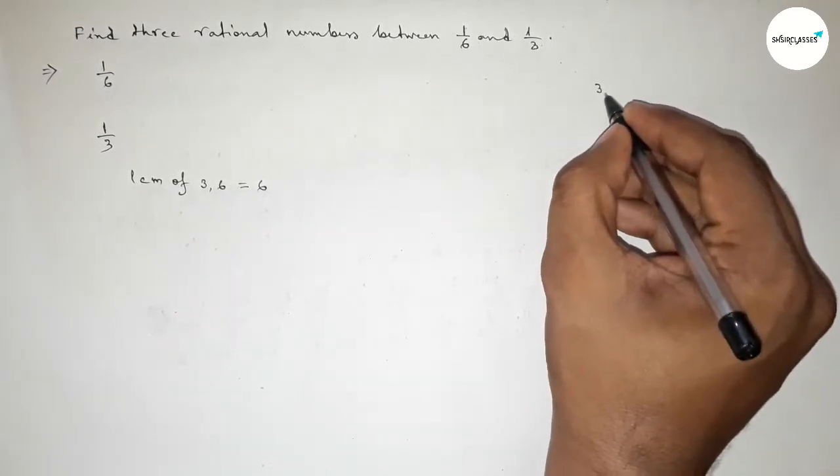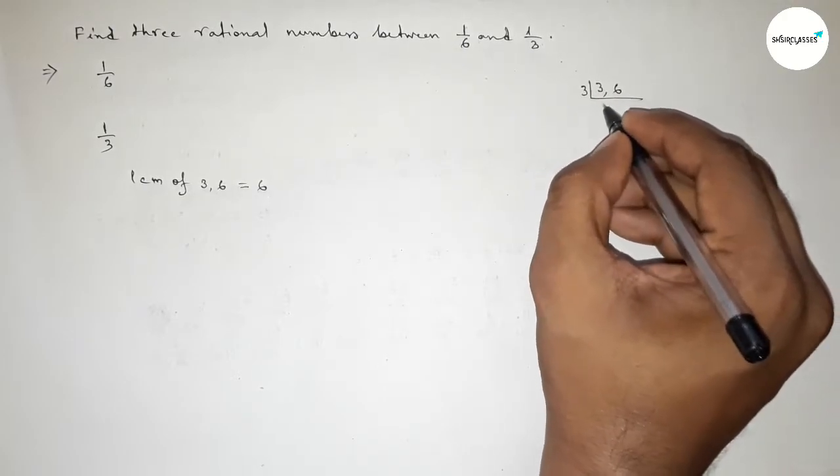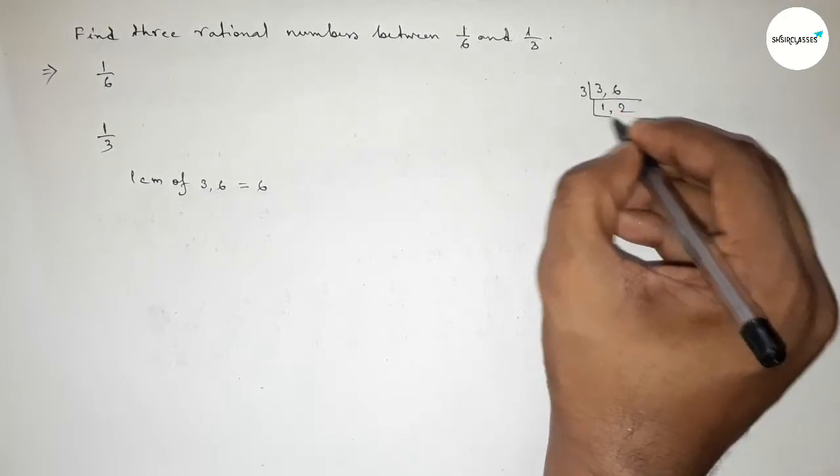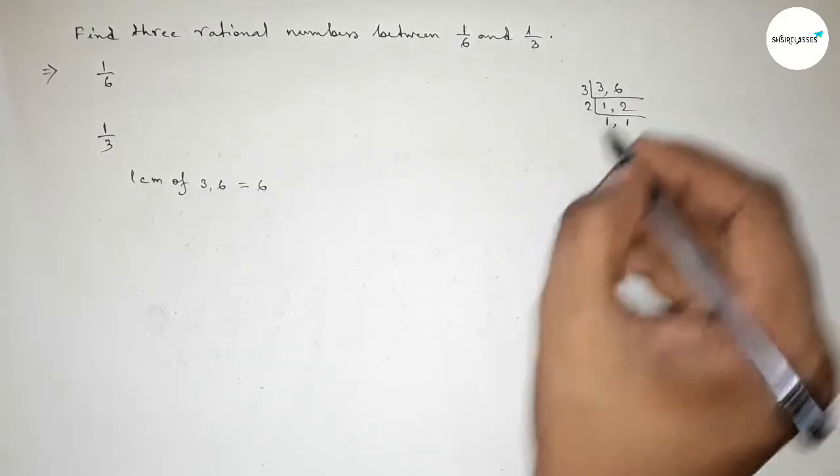The LCM is obviously 6. Now roughly discussing here, so first factorizing: first dividing by 3, then dividing by 2.